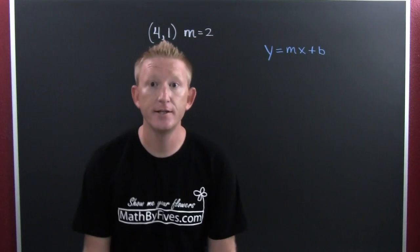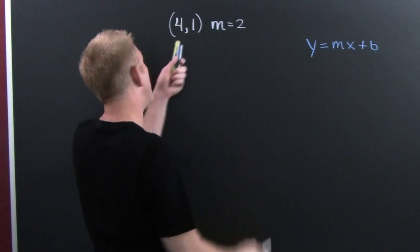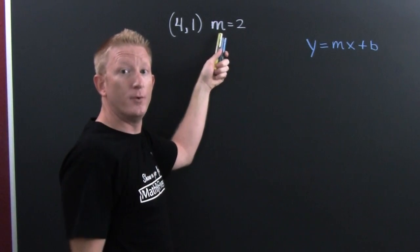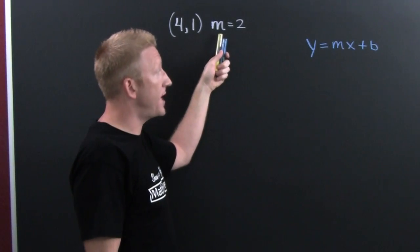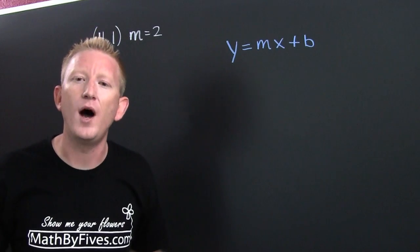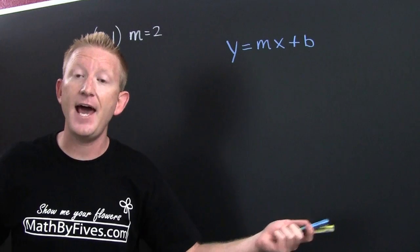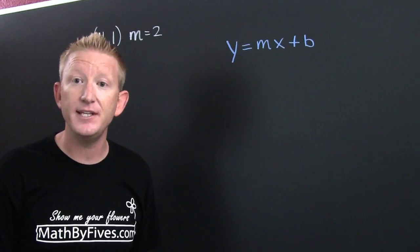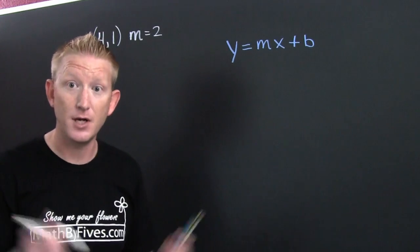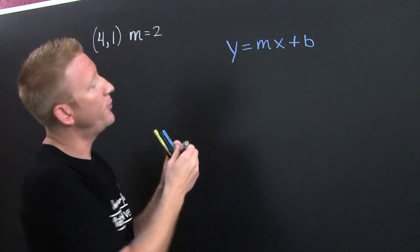Let's look at this problem. I have the point (4, 1) and the slope is two. What do we want to do? We want to use y equals mx plus b, because it's the backdoor method. They give us a y, they give us a slope, and they give us an x. All we need to do is find that b, and then we can plug it into y equals mx plus b.